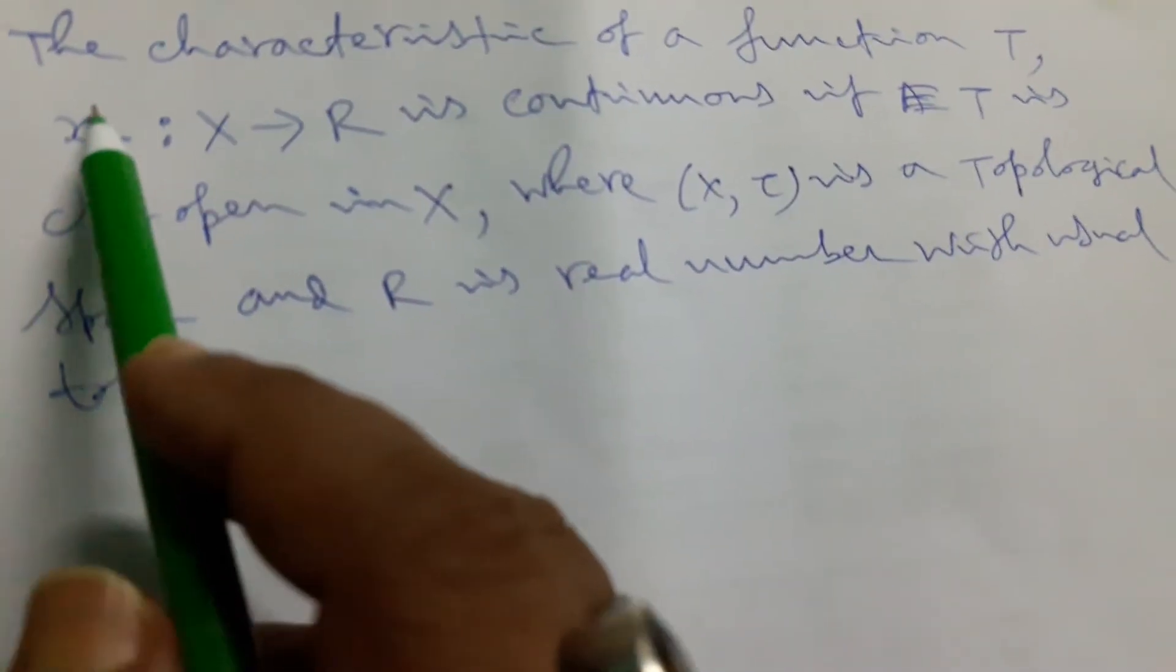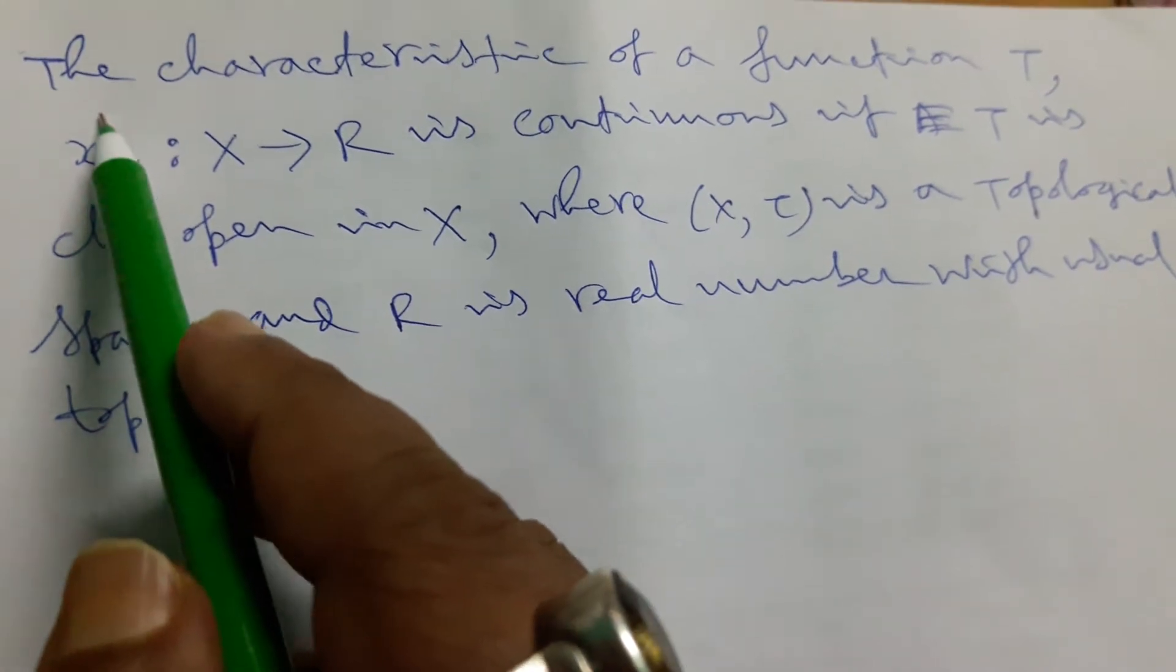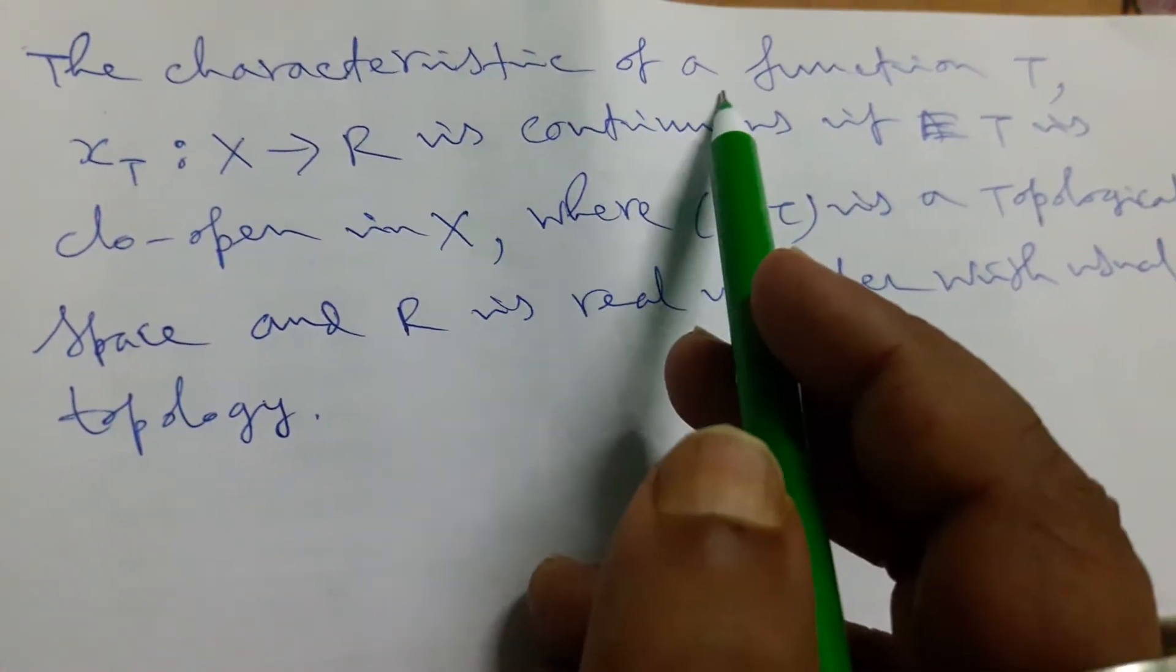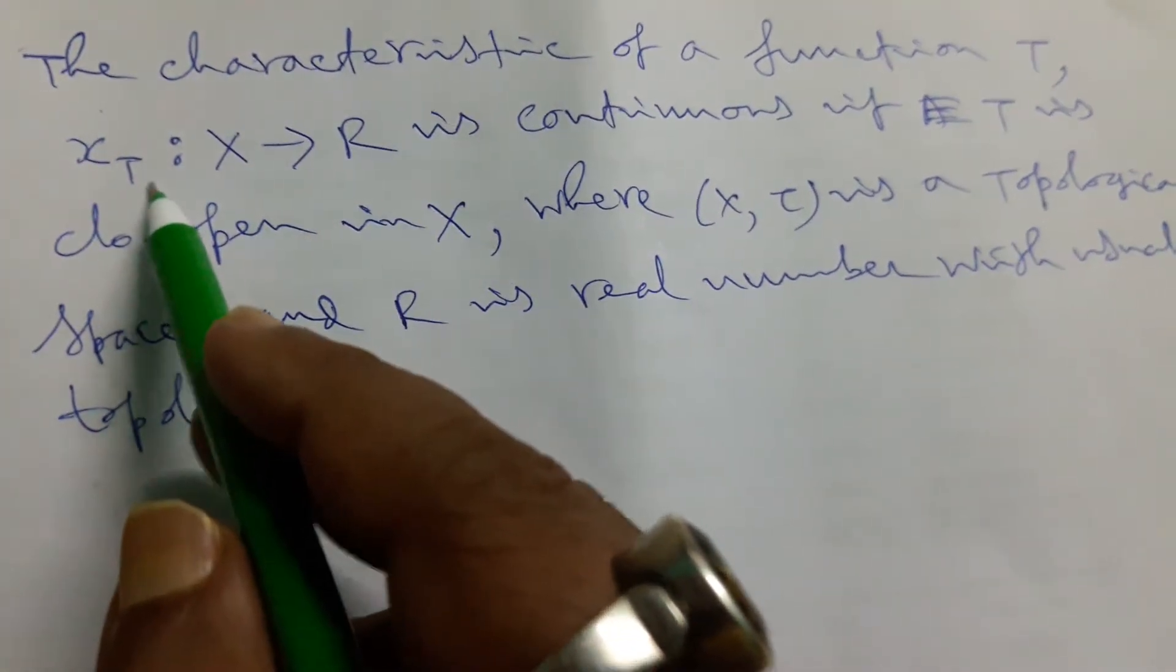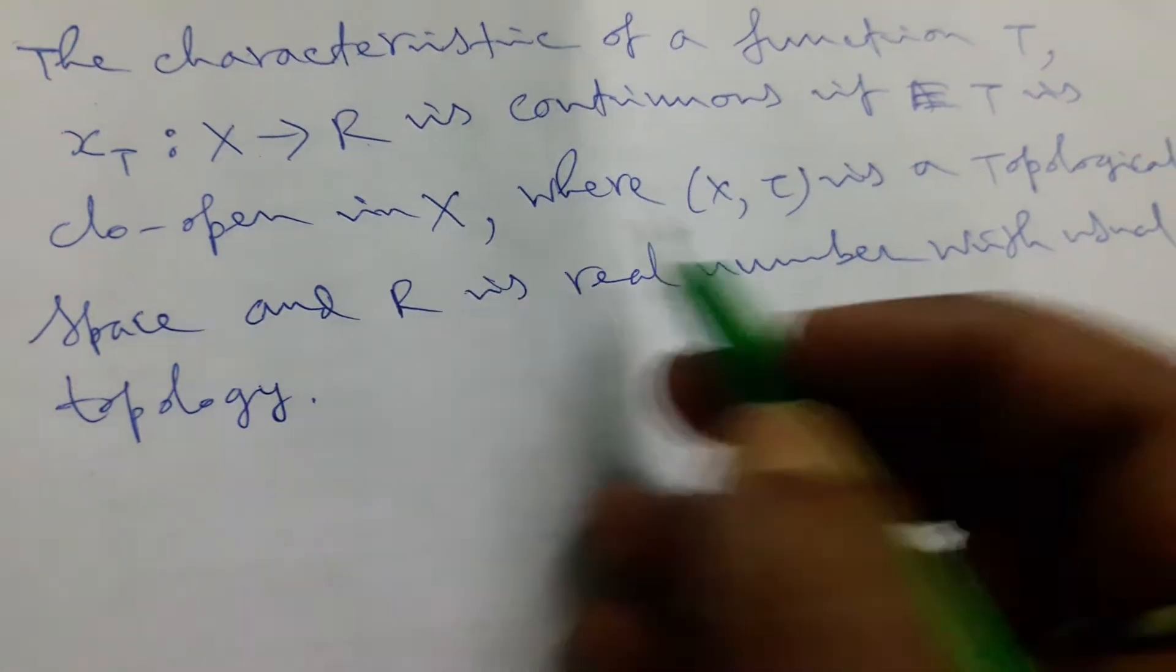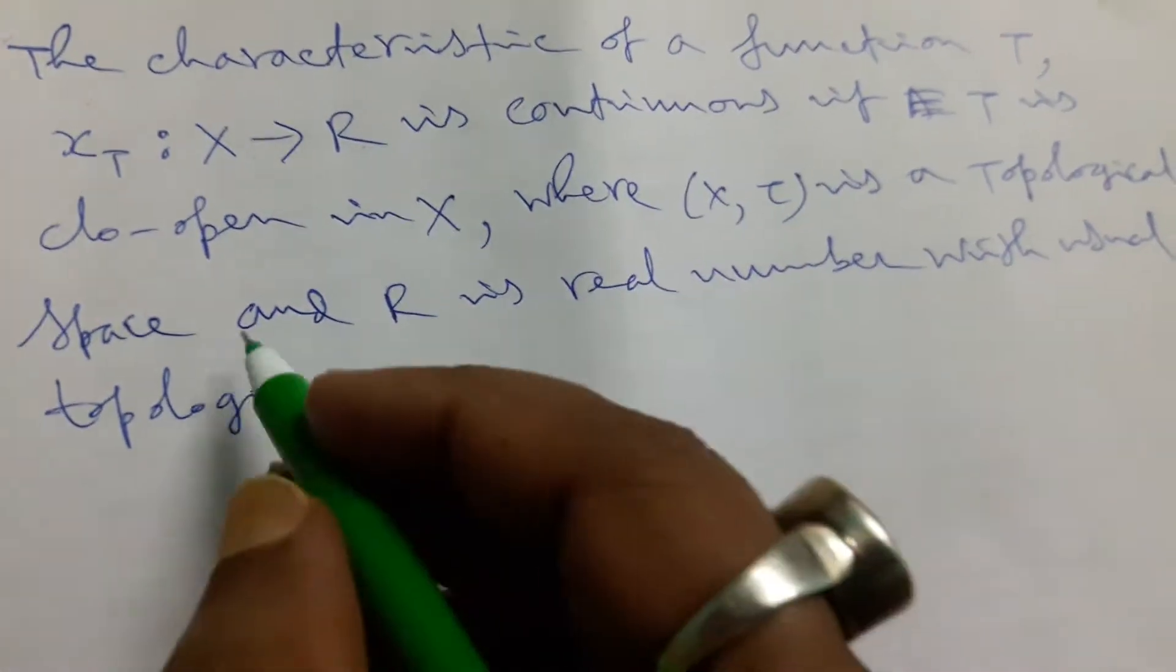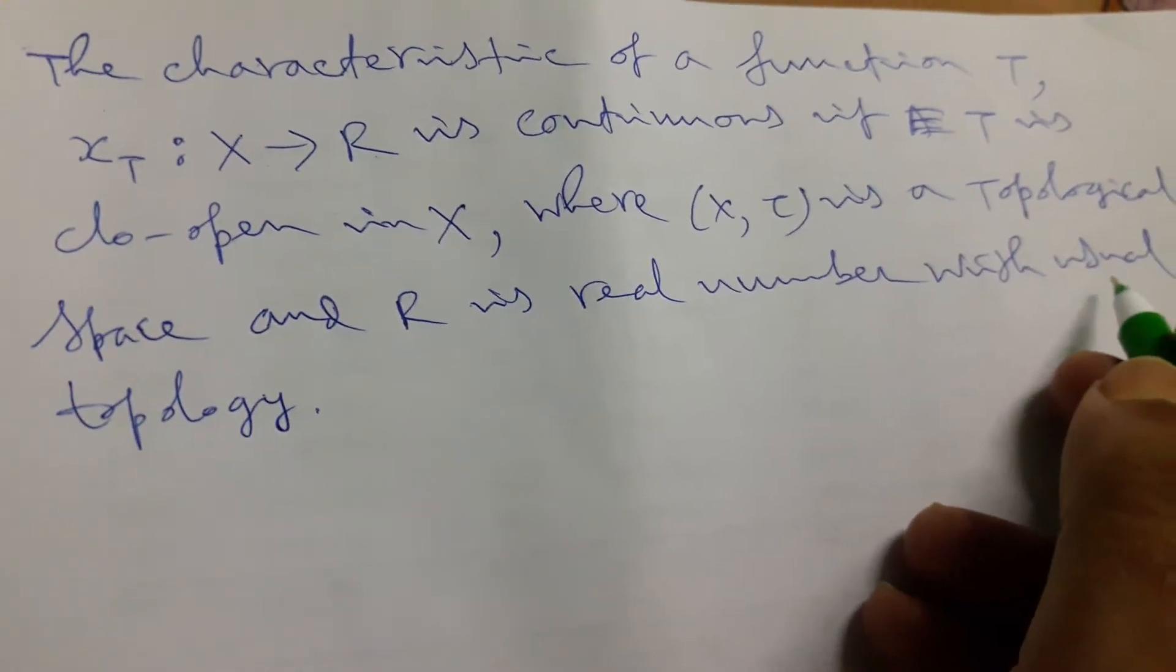Welcome to the viewers. We discuss today an important example: the characteristic function of a function T, χ_T, such that X to R is continuous if T is probing in X, where (X,τ) is a topological space and R is the real numbers with usual topology.